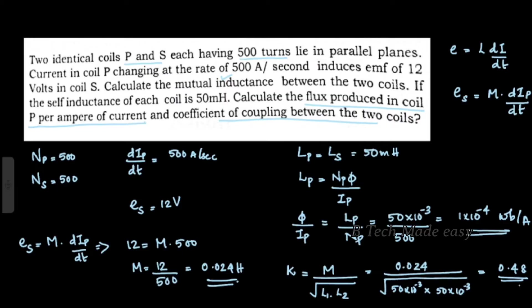We have all the values, so we substitute directly: k equals 0.024 divided by the square root of 50 mH times 50 mH, which is 50 into 10 raised to minus 3 times 50 into 10 raised to minus 3. This gives k equal to 0.48.